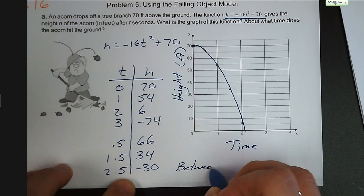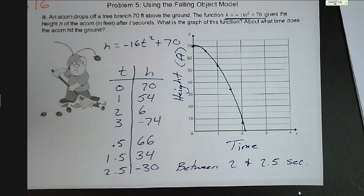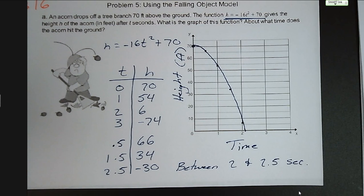Let's think about the reasonableness of this graph. Why do we stop at 0? Unless there's a giant hole next to the tree, the acorn is going to stop falling once it hits the ground. We assume that height of 0 is ground level, so the acorn stops when it hits 0.